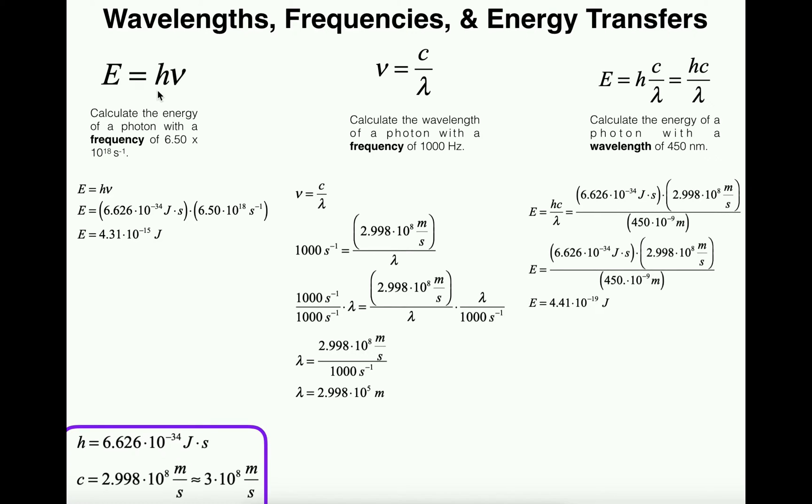Now h is a constant you should memorize because in general chemistry you'll use it quite a bit, and if you take physical chemistry you'll use it even more. h is equal to 6.626 × 10⁻³⁴ joule seconds. If we take this constant and multiply by the frequency in Hertz or inverse seconds, that should give us the energy.